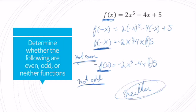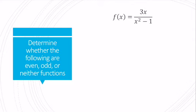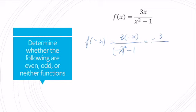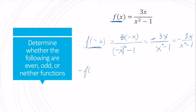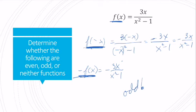One more example: f of x equals 3x over x squared minus 1. Taking f of negative x gives 3 times negative x over negative x squared minus 1, which simplifies to negative 3x over x squared minus 1. So f of x does not equal f of negative x — it's not even. Now negative f of x equals negative 3x over x squared minus 1. Since f of negative x equals negative f of x, this function is odd.